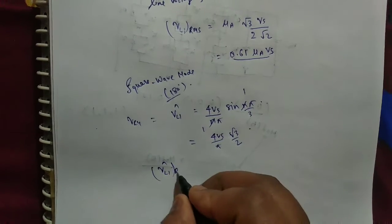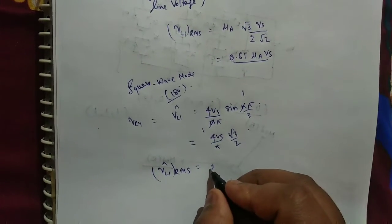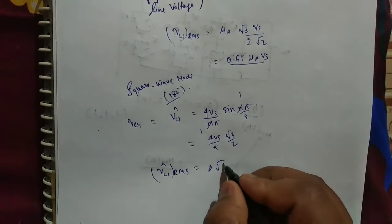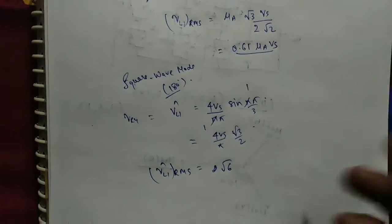Sin(π/3) is √3 by 2, so V_L1 RMS, RMS is divided by 2√2, so it will become √6 by π V_S.